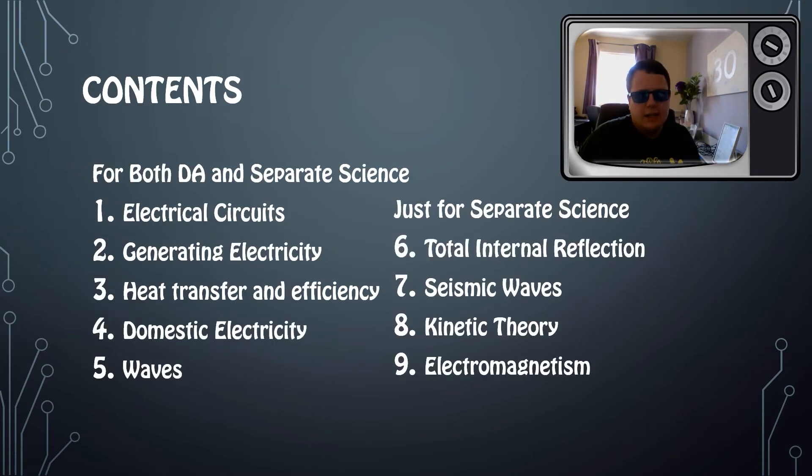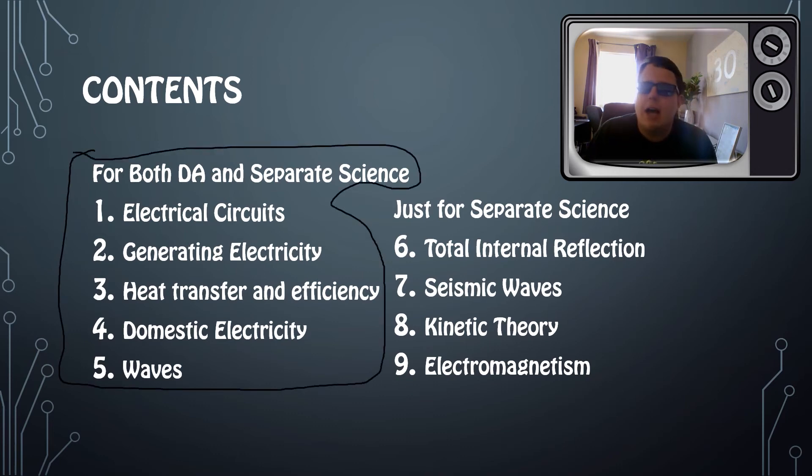Okay, so the contents. Like I said, we're going to have nine of these. The first five down this side with these titles are for both those doing double award and separate science, whereas these four, that's just the separate science topics. They're going to be numbered in that order, and the titles will match what is on the specification.